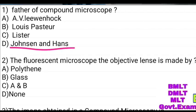The fluorescence microscope objective lens is made by: Holy Athene, Glass A and B, non. Answer: Holy Athene.